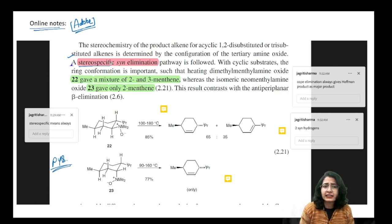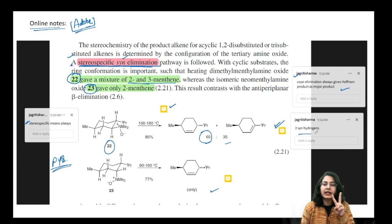The stereochemistry is syn. And example 22, this gave us a mixture of 2 and 3 menthene. This makes a mixture. And example 23 gave only menthene. So I also want to add some points over here. First of all, what is a stereospecific reaction? Stereospecific means always it is going to go through the same pathway and give you the same product. So I have added one more comment over here. Cope elimination always gives Hofmann product as a major product because it goes through a 5-member transition state. This always makes Hofmann major. Then next, I have added that here I have 2 syn hydrogens in this one. Here there are 2 syn hydrogens. And here I have only 1 syn hydrogen that I have added in another comment.